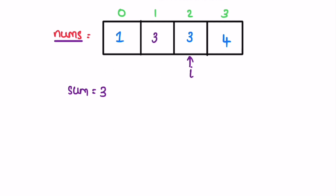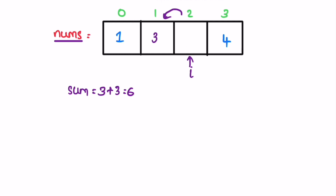Now i is pointing at the next element and sum is three. We calculate the new sum: the current element is three and its previous element is also three, so sum is six. We replace the current element with sum, so three becomes six. Move the i pointer again. Now i is pointing at the next element and sum is six. We calculate the sum again: current element is four and previous element is six, so sum is ten.